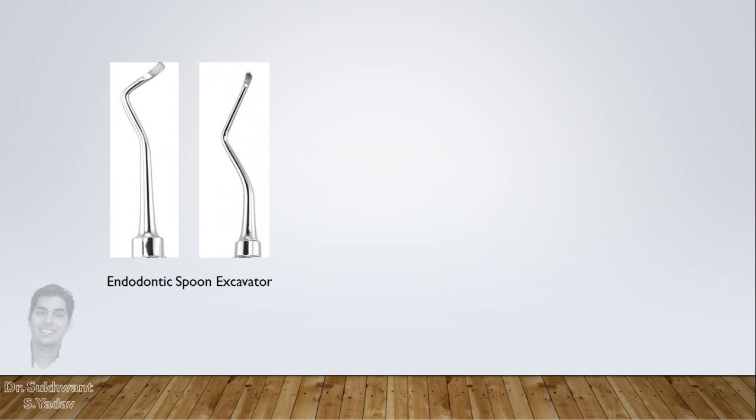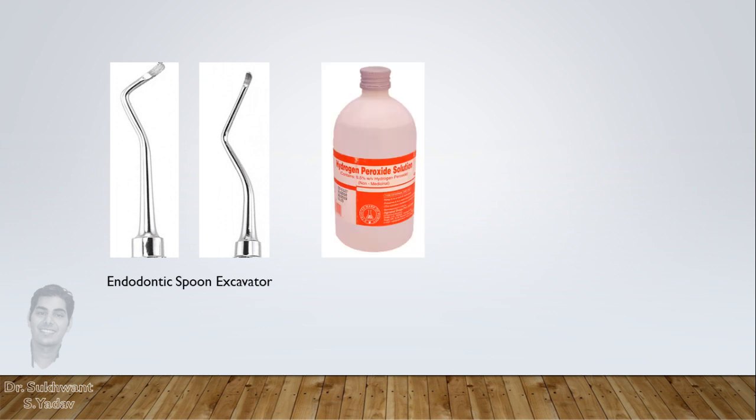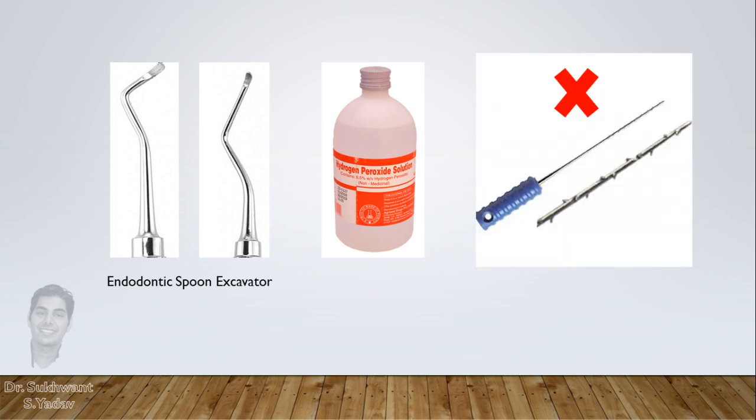When there is profuse bleeding from the access cavity that hinders vision in locating canals, this is because of a severely inflamed pulp. Take a sharp spoon excavator, or endodontic spoon, and try to remove coronal pulp as much as possible, then irrigate with sodium hypochlorite and give a pressure pack. For the pressure pack, you can use hydrogen peroxide-soaked cotton. If bleeding continues, try to locate the canal and do orifice shaping in it; this will remove pulp from the located canal and help control bleeding. Don't place broaches blindly – visualize and prepare the access cavity. Doing anything blindly is not a good idea.